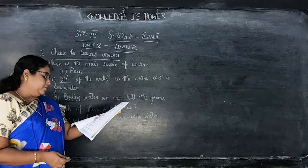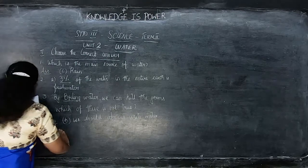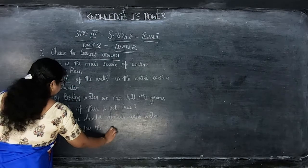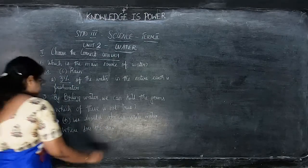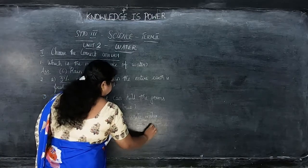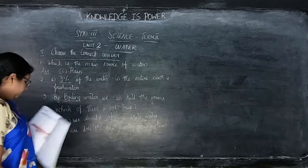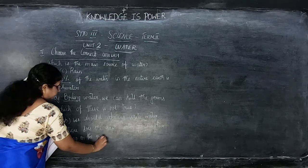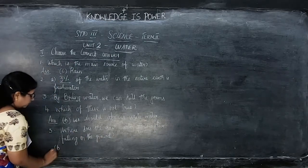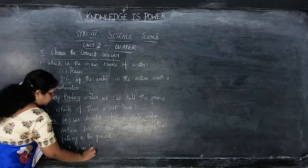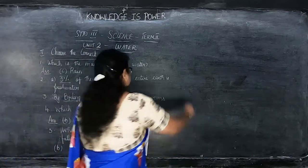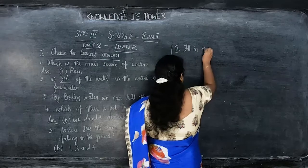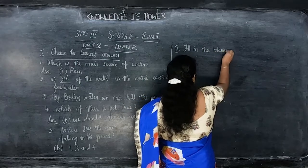Fifth: where does the rain water go after falling on the ground? Four options are given. Those who have the book, you can mark it; others, write in your notebook. Next is roman number two — fill in the blanks.